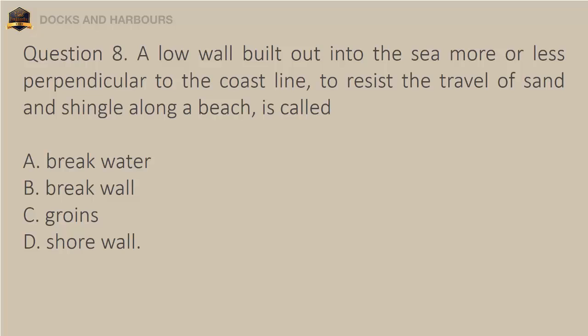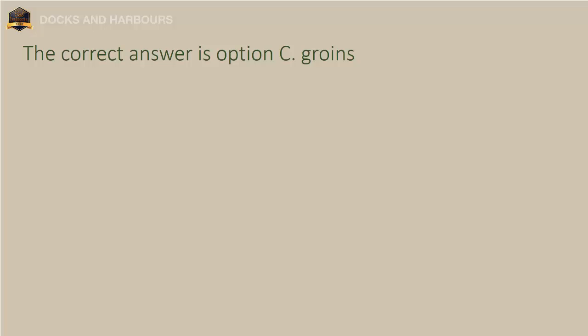Question 8. A low wall built out into the sea more or less perpendicular to the coastline, to resist the travel of sand and shingle along a beach, is called: a. Breakwater, b. Break wall, c. Groins, d. Shore wall. The correct answer is option C: Groins.